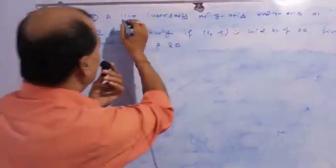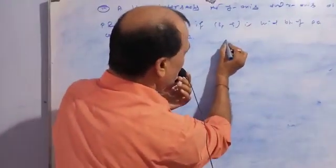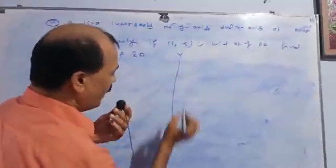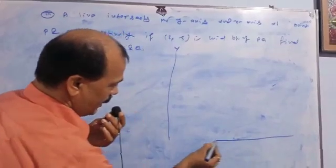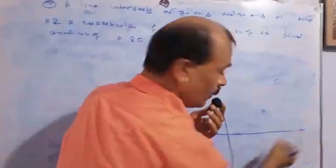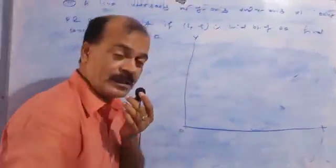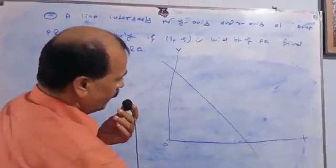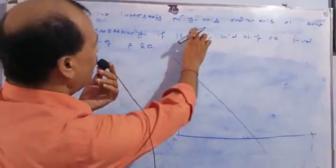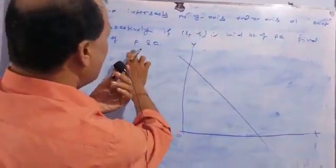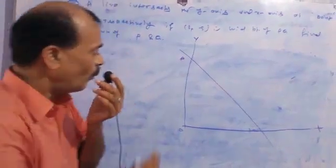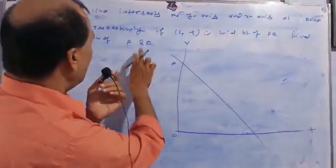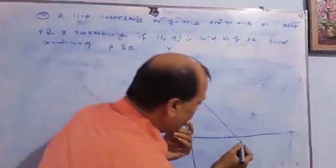Now come to this question. Suppose a line — first we will draw the graph. Here is the y-axis, and here is the x-axis. O is the origin. The question says a line cuts the y-axis at point P. This is the point P which is located on the y-axis, and Q is located on the x-axis.